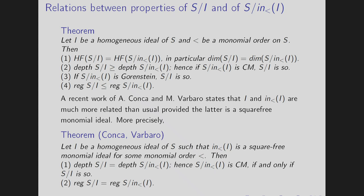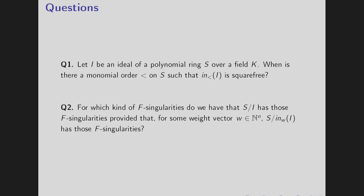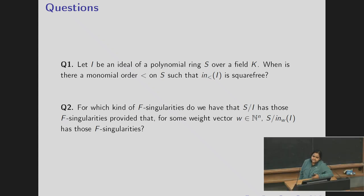Actually they prove a stronger version and this comes as a corollary of their results. So in view of these results we ask the following two questions: let I be an ideal of a polynomial ring S over a field K, when there is a monomial order less than such that initial ideal is square free? So there are some well-known examples. One is the binomial edge ideals. Another one is algebra with straightening laws. So here we identify a new class. Then the second one is that for which kinds of F-singularities do we have S mod I has those F-singularities provided with respect to some weight ordering S mod initial ideal has those F-singularities.